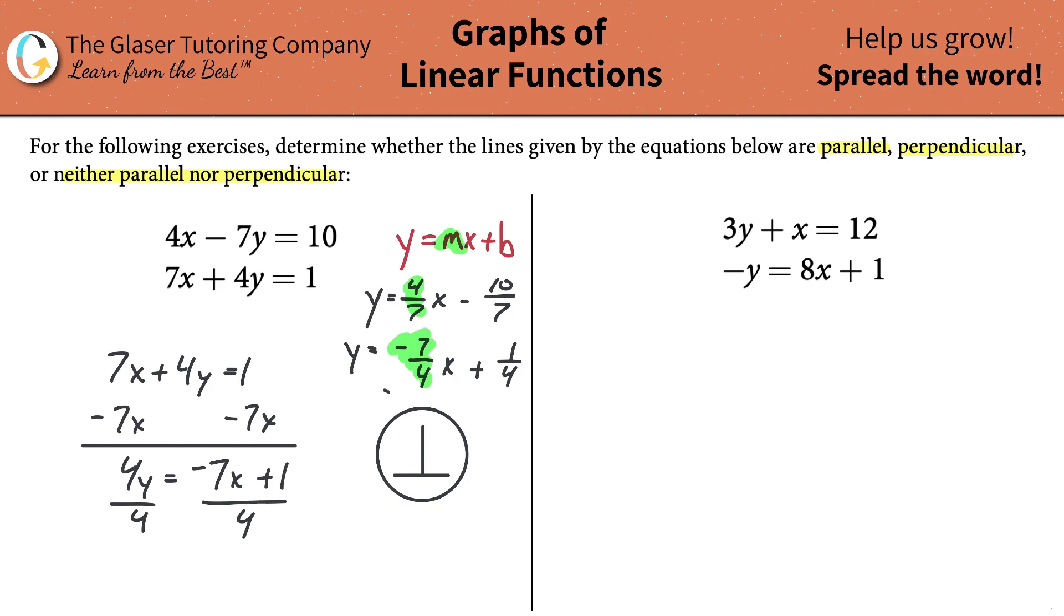We're going to do the same process for the second one, right? Watch how fast this is. Solve this bad boy for y. So y is going to be equal to negative one third x, and that's going to then be plus 12 over 3, which comes out to be 4. The second equation, when I solve that for y, it's going to look just like this: y is then equal to negative 8x plus 1. Let me just double check my math. That looks all good to me. Great. Now we just have to compare the two slopes.